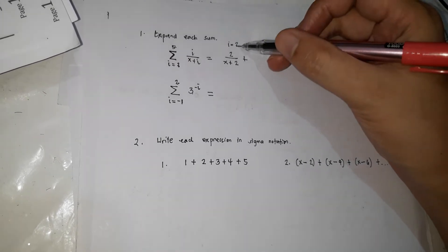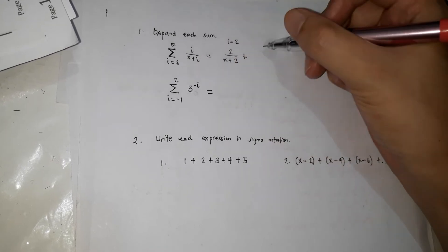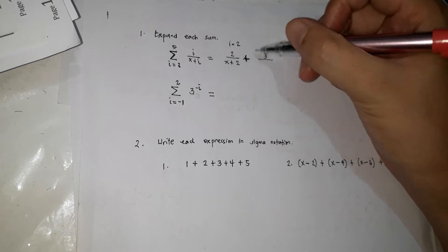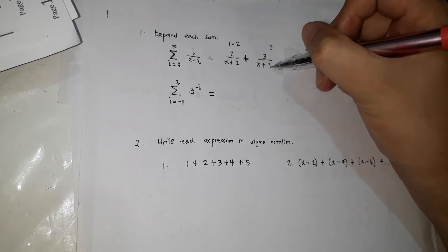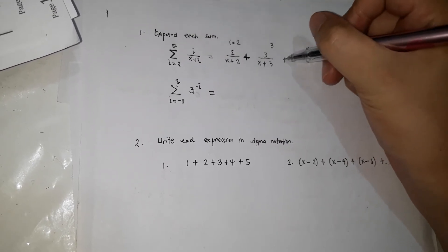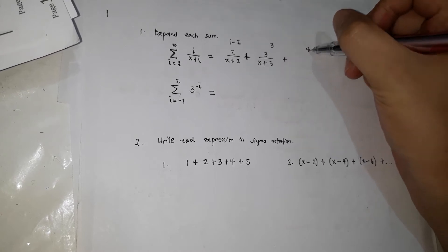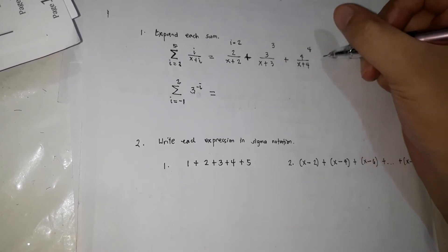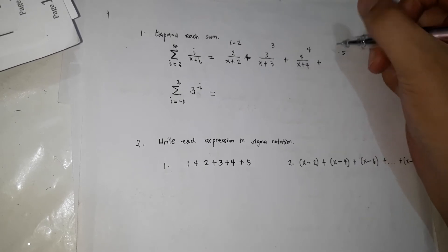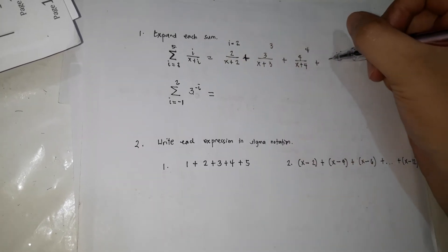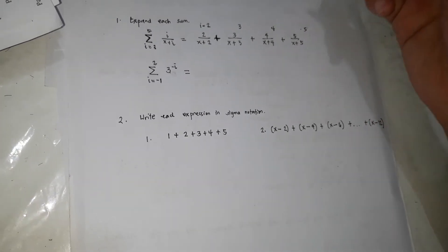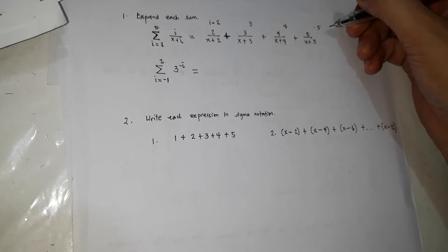So 2 over x plus 2 plus. Sunod niyan is, sunod na value is 3, 4, 5. So kasi from 2 daw hanggang sa 5. So plus, kasi summation, plus 3 over x plus 3. Ang i, palitan mo ng 3. Plus ang i, palitan mo ng 4. 4 over x plus 4. Hanggang pinaka-last is 5. This is the last value. So 5 over x plus 5. So that's how it is to expand.